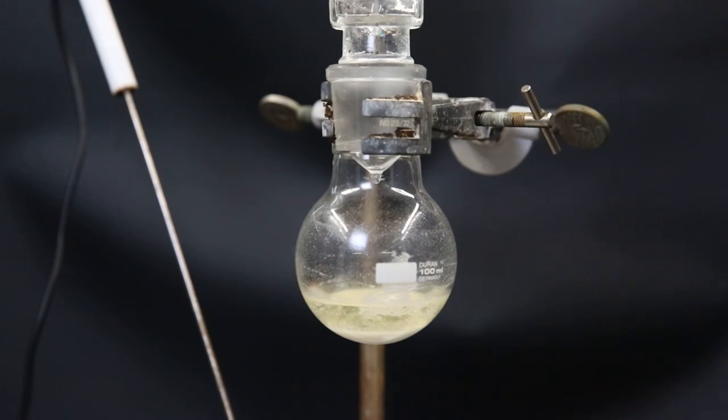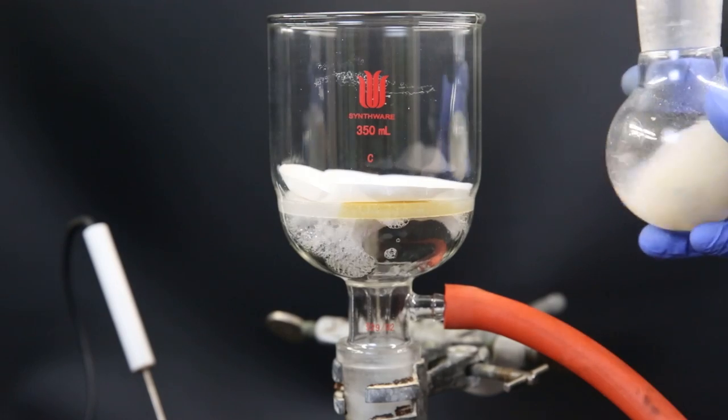After stirring it for a while, we can see a white solid at the bottom and the solvent has become yellow. To get it out, I set it up for a vacuum filtration.